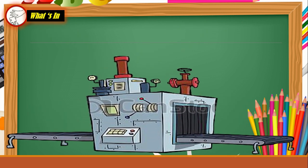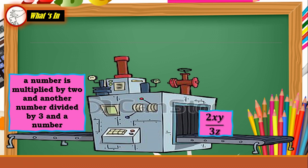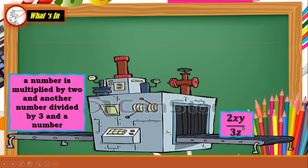Let's try: 'a number is multiplied by 2 and another number divided by 3 and a number.' In this example, we have 3 unknown quantities. We have 2 and 3 as our known quantities. And of course, multiplication for 'multiplied' and division for 'divided' are our operations. Therefore, a number X is multiplied by 2 and another number divided by 3 and a number.